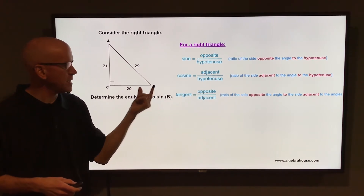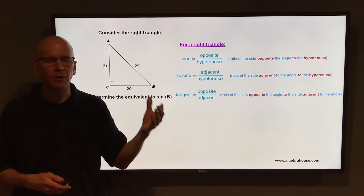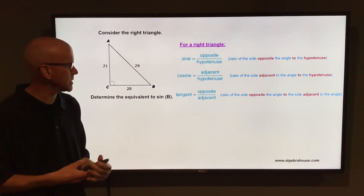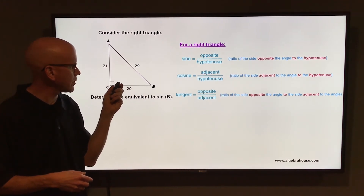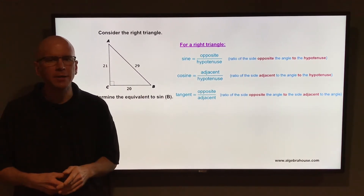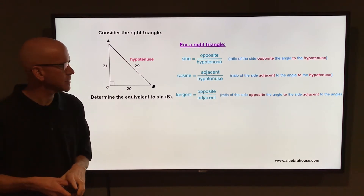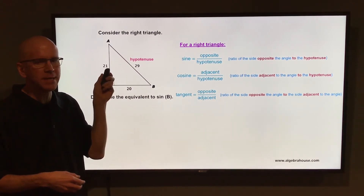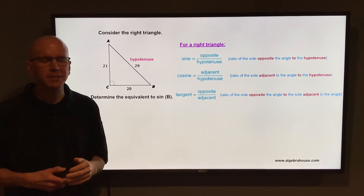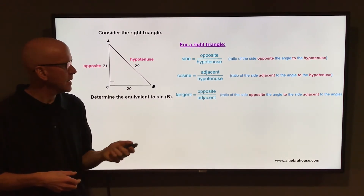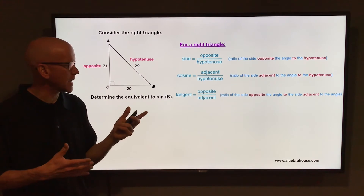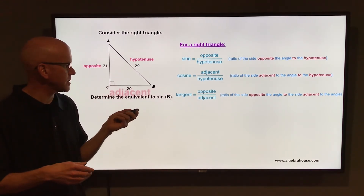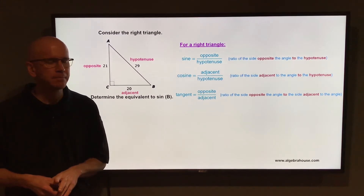In relation to angle B, we want to figure out which sides are opposite, adjacent, and hypotenuse. First of all, the hypotenuse is the side across from the right angle, so directly across from the right angle is 29 — 29 is the hypotenuse. If you look at angle B, directly across or opposite angle B is 21, so the opposite side is 21. The adjacent side is next to angle B but not the hypotenuse, so the side adjacent to angle B is 20.